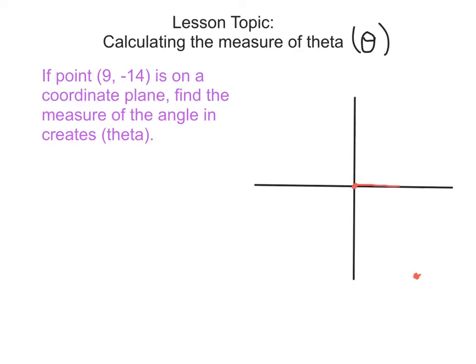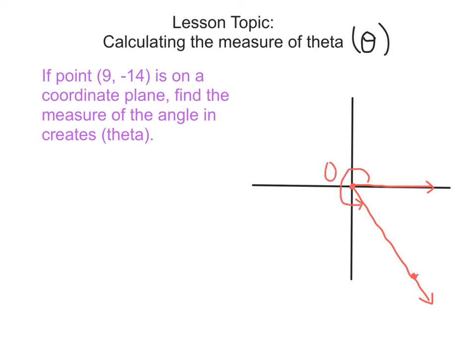We create the terminal side of the angle through that point. So the angle we're trying to calculate in the end is this angle here, which we call theta — the original angle.